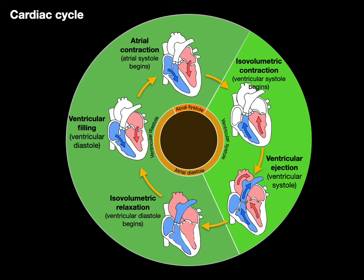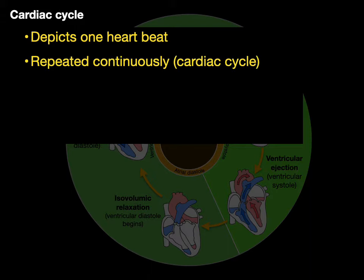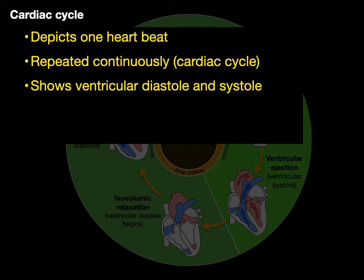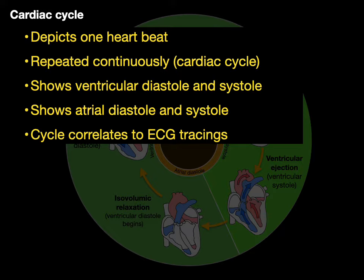This image is what we're going to use as we cover the different phases of the cardiac cycle. The cardiac cycle depicts one heartbeat, repeated continuously — hence the term cardiac cycle. It contains ventricular diastole and ventricular systole, as well as atrial diastole and systole, and it correlates to ECG tracings.